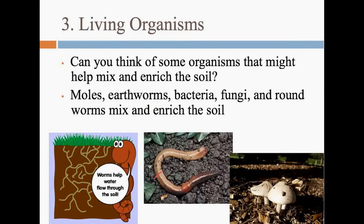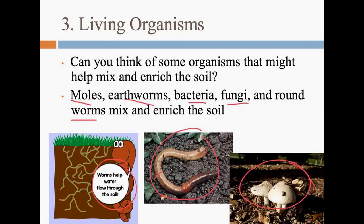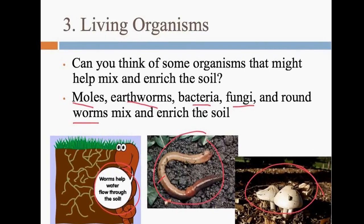Living organisms influence how soil forms. Things like moles, earthworms, bacteria, fungi, and roundworms all live in the soil and actually help it — it's good that they're in there. Earthworms decompose things and make nutrients available for plants, and they also help water flow through the soil. Similarly, fungi decompose and make nutrients available for plants. Plants help enrich the soil, so they are all very helpful.